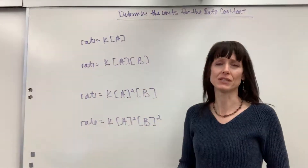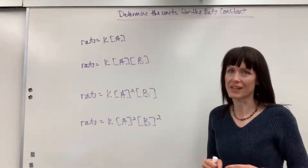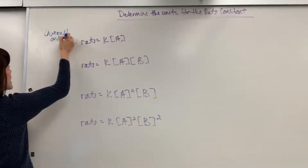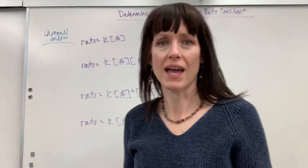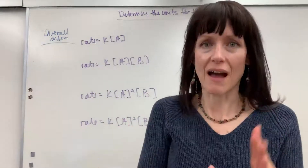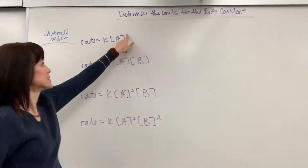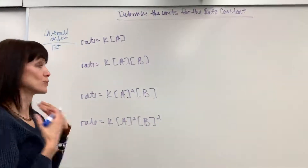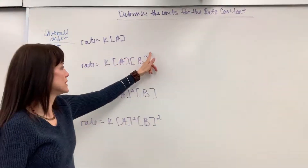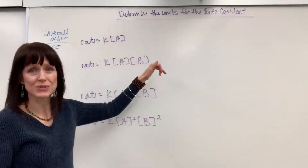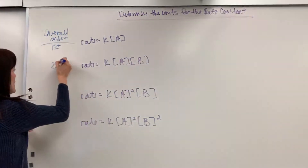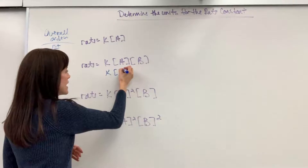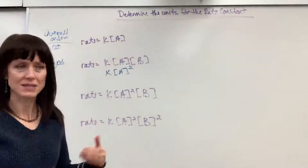First, let's review the overall order for each of these rate laws, because the unit for K will always correspond to that particular order. For a rate law with just A, the exponent is understood to be 1 — that's first order. If A and B are each to the first power, that's 1 plus 1, a second order reaction. And K times A squared is also second order.